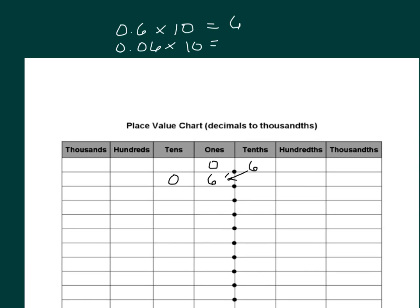Much the same way as we work for the other problem there, we have 6 hundredths. And when we take 6 hundredths and we multiply by 10, the digits will get shifted so that we have 6 tenths.